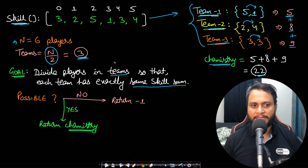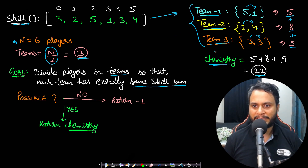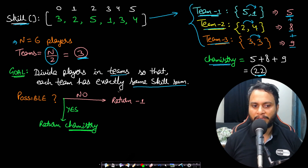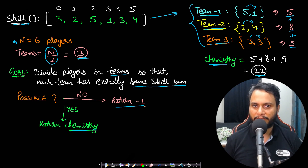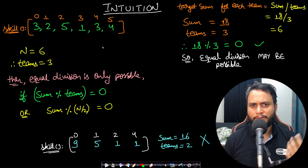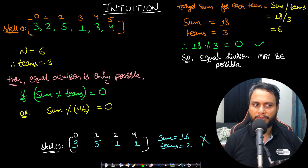If it is possible to do this kind of team assignment where each team has the same skill sum, return the total chemistry; otherwise return -1. That is the entire problem statement. Now let's look at the intuition for solving this problem.